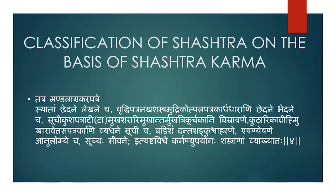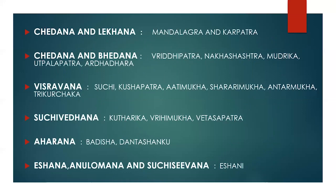Shastra are also classified on the basis of the particular Shastra karma performed by them. For Chhedan and Lekhan, Mandalagra and Karpatra can be used. For Chhedan and Bhedan, Vriddhipatra, Nakshastra, Mudrika, Utpalpatra, and Ardhadhar can be used. For Visravan, Suchi, Kushpatra, Atimukha, Shararimukha, Antarmukha, and Trikurchak can be used. Vedhan can be done with Kutharika, Vrihimukha, and Vetaspatra. Aharan or extraction is done by Vadish, Dantashanku, and Eshani. Anuloman and Sivan are done by Eshani. Suchi is used for Vedhan as well as Sivan karma.